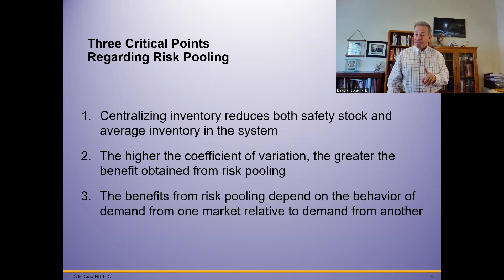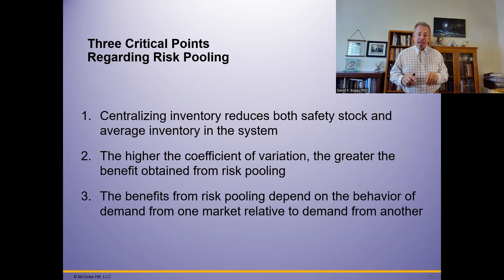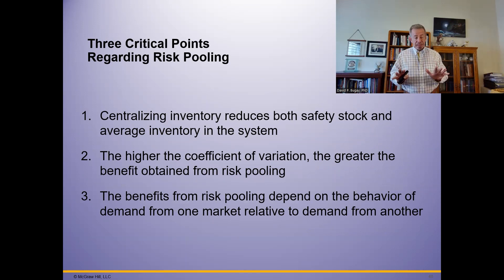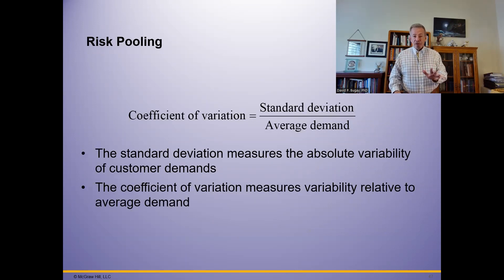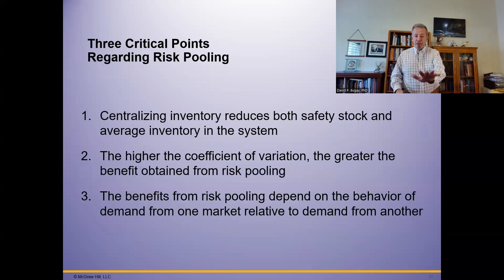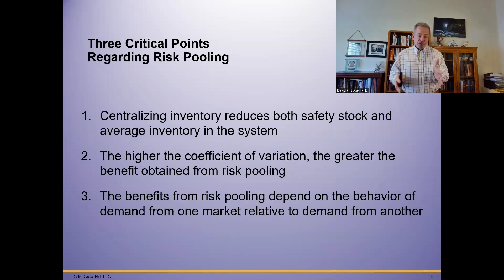There are three critical points regarding risk pooling. First, centralizing inventory reduces safety stock — a big savings. Second, it reduces average inventory across the system. Third, the higher the coefficient of variation, the greater the benefit from risk pooling. That number helps you decide whether to reduce the number of distribution points.